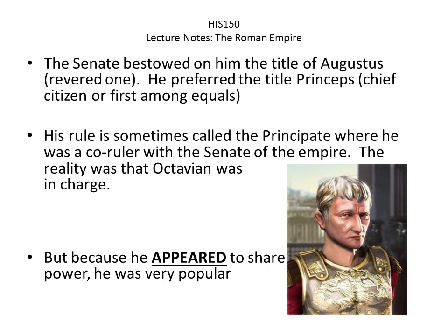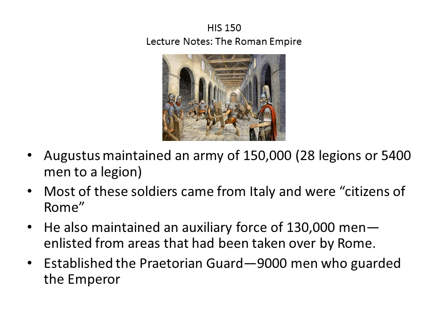The Senate bestowed on him the title of Augustus, meaning 'revered one' — this is where the month of August comes from. He preferred the title princeps, meaning 'first among equals,' showing a false modesty that really appealed to people. His rule is sometimes called the principate, where he was co-ruler with the Senate. Because he appeared to share power, he was very popular and the Senate appreciated that he allowed them to maintain their dignity and respect.